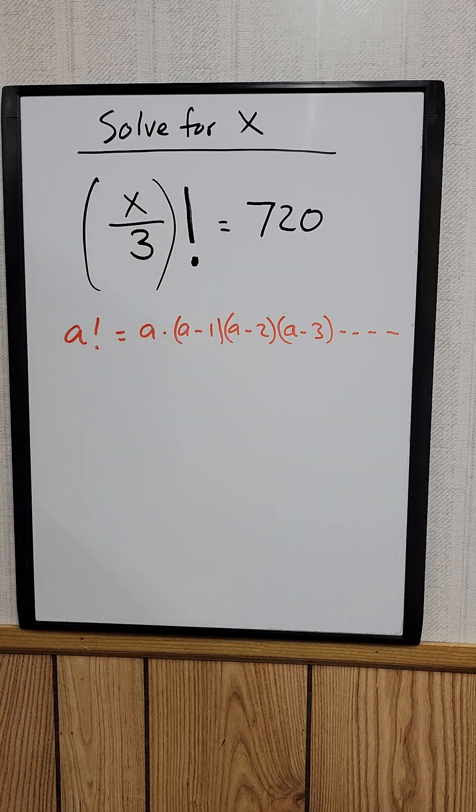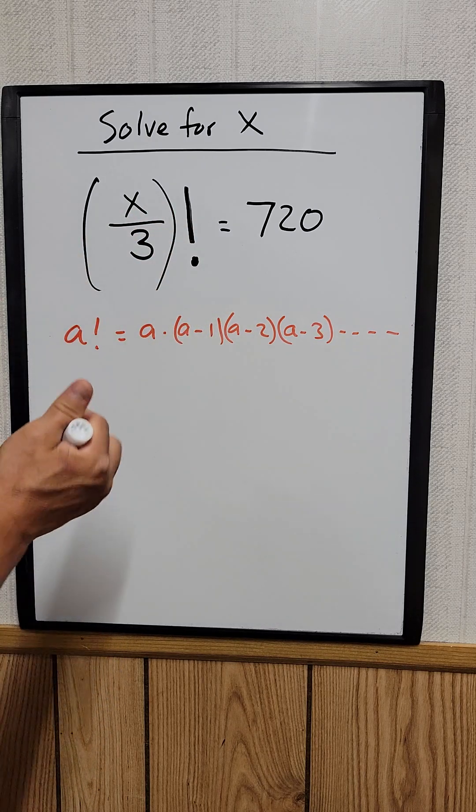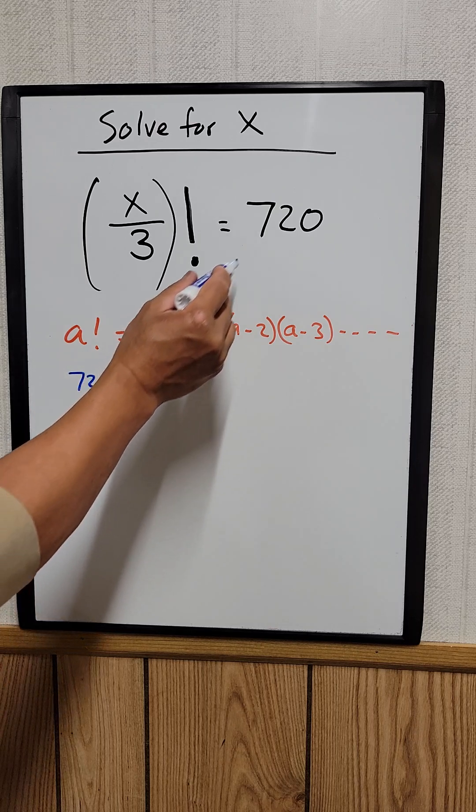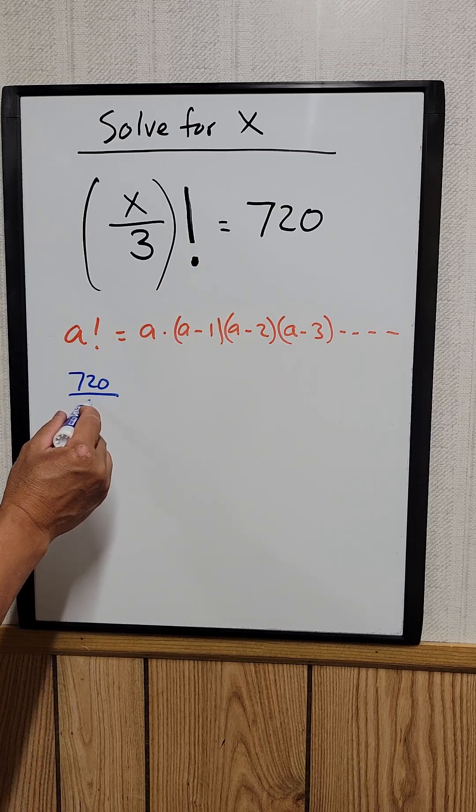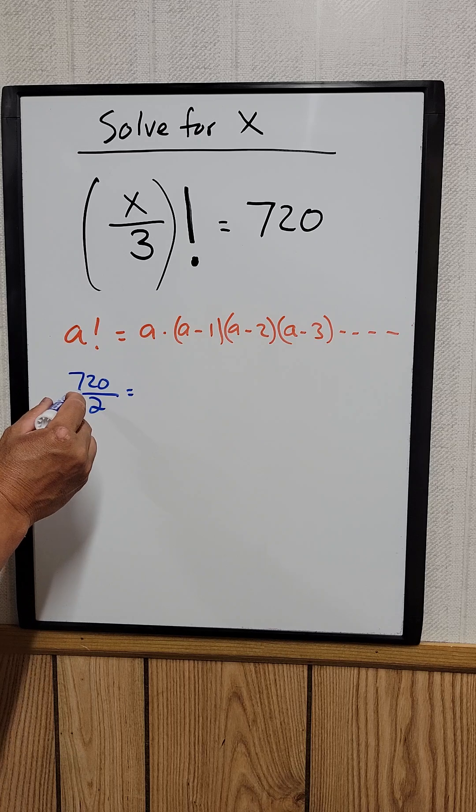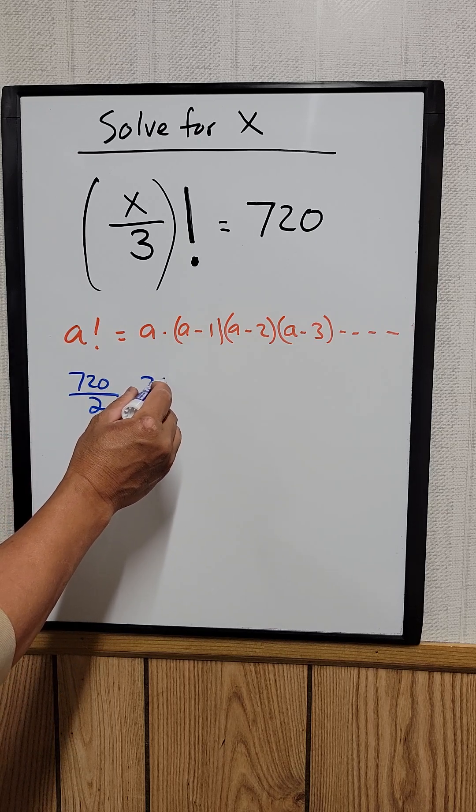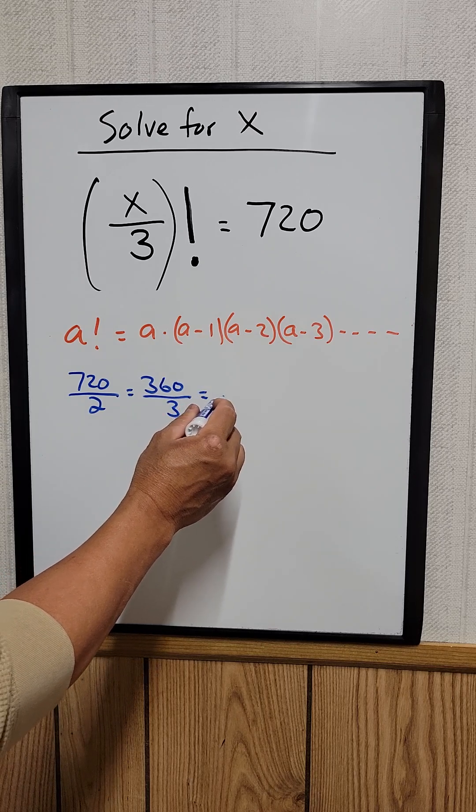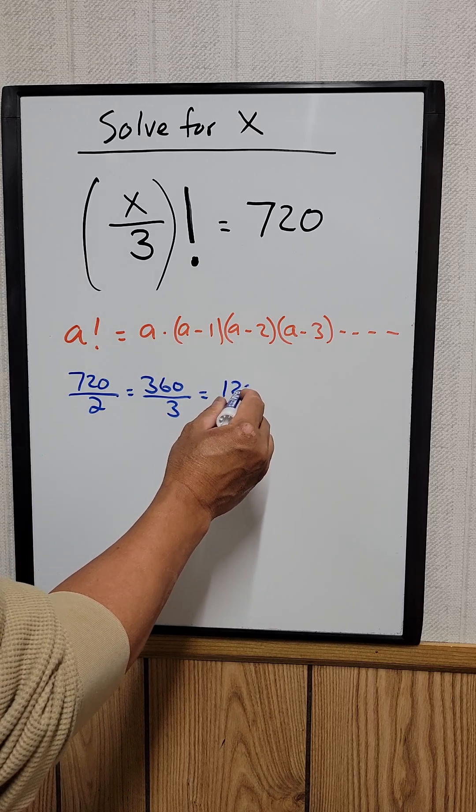So what I would do is I would take the 720. I start to divide by 2. That's equal to 360, and then I divide by 3, which is equal to 120.